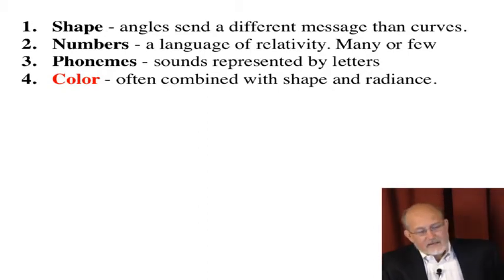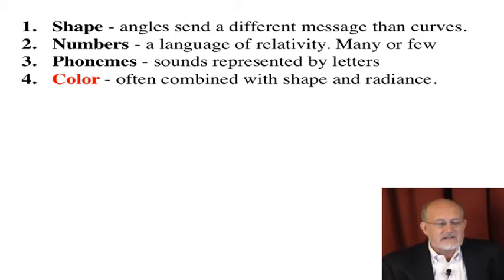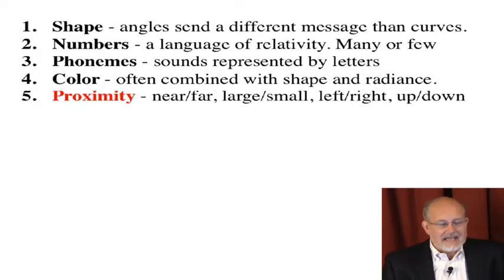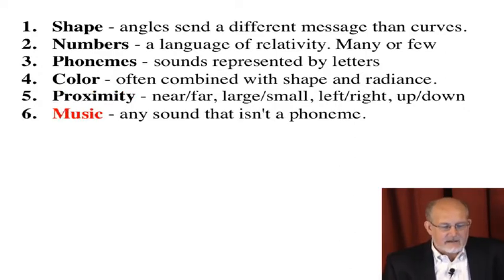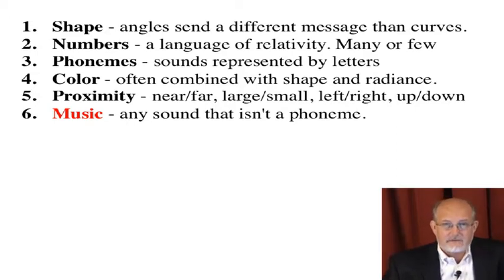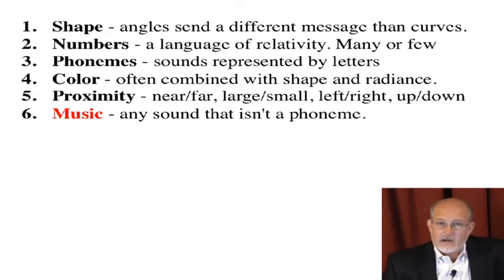By the way, there are 43 phonemes in English. Color is a language — there's a language of color. There's a language of proximity. There's a language of music. And music is any sound that is not a phoneme, a piece of speech. A dog barking or a jet flying overhead is music.